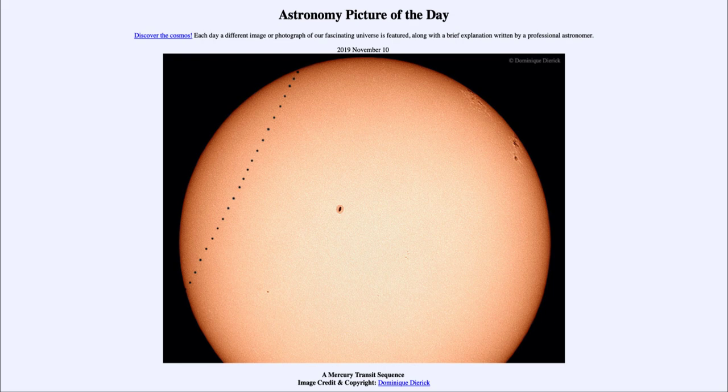...for November 10th of 2019 is titled A Mercury Transit Sequence. So what do we see here? Well, this is an image of our sun and we can see the surface of the sun with a number of dark spots on it.